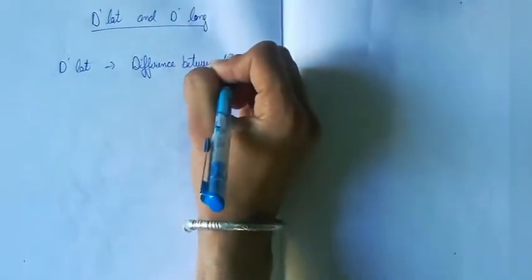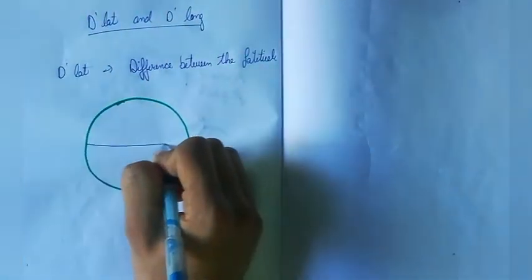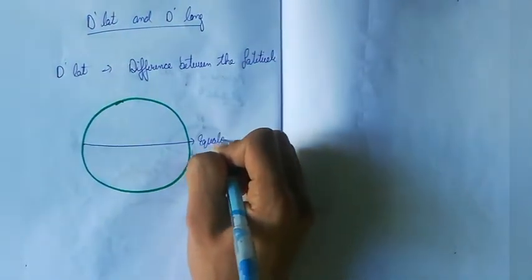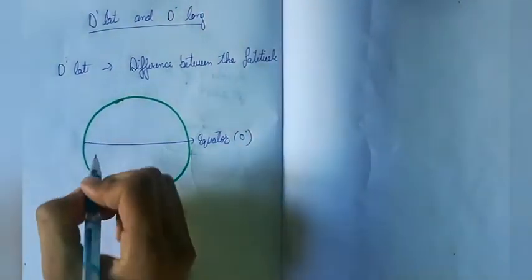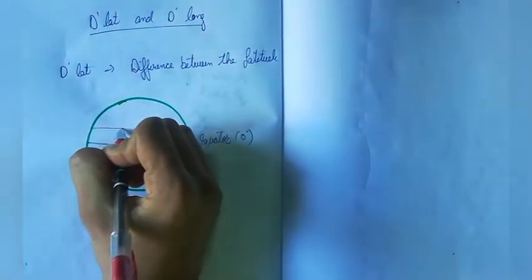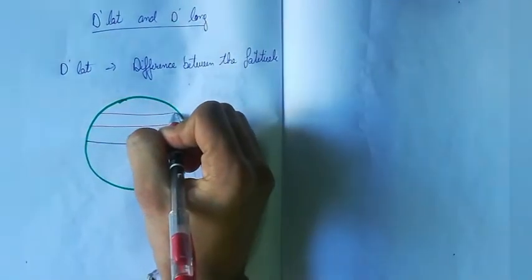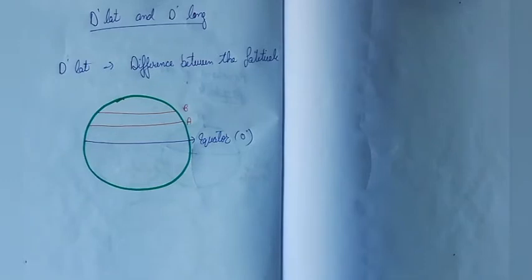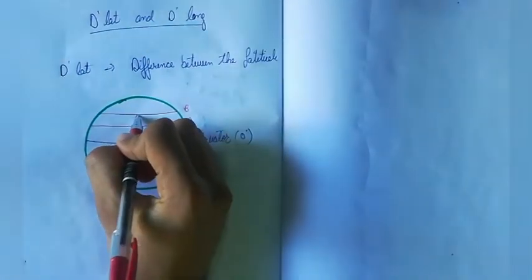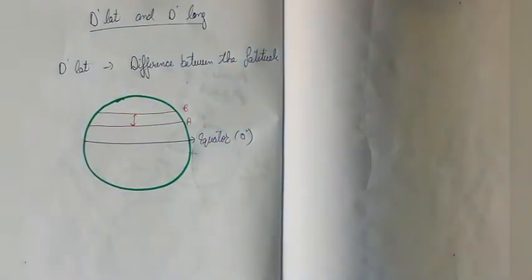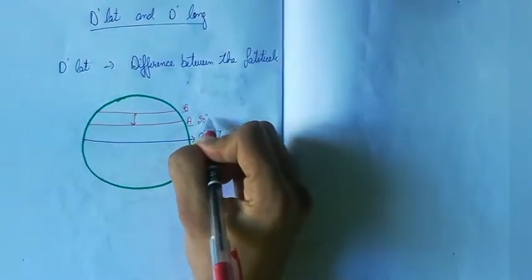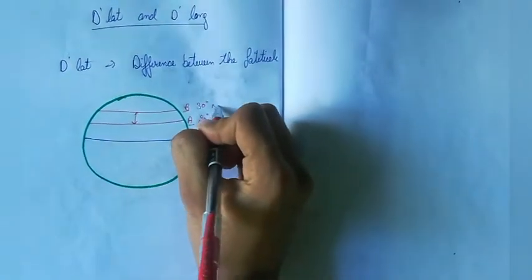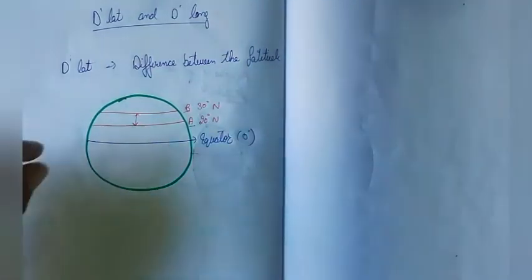To explain DLAT — the difference between latitudes — I'll draw a diagram. This is the equator at zero degrees. Let this be latitude A and this be another latitude B. DLAT means the difference between the latitudes. Let us consider A is 20 degrees north and B is 30 degrees north. So the difference between these two latitudes is 10 degrees.